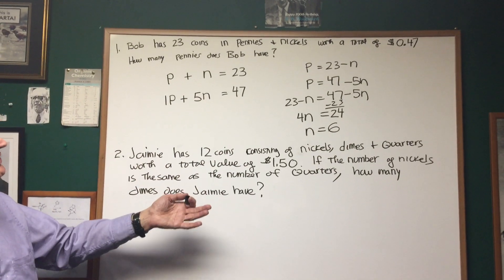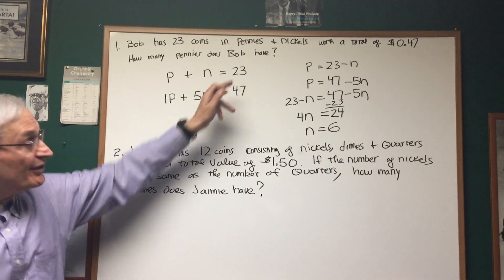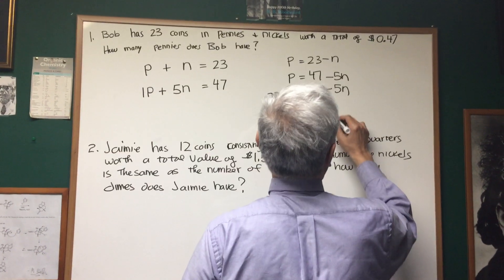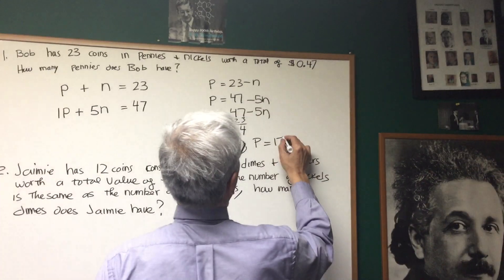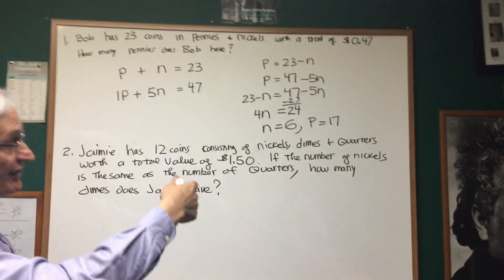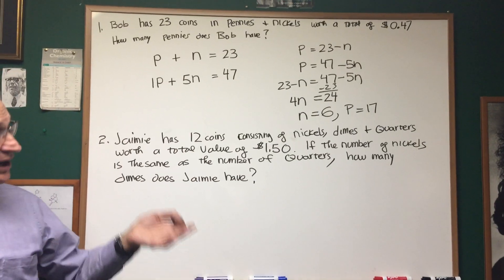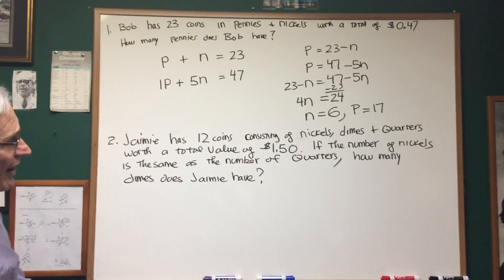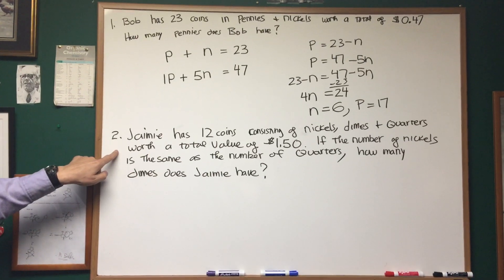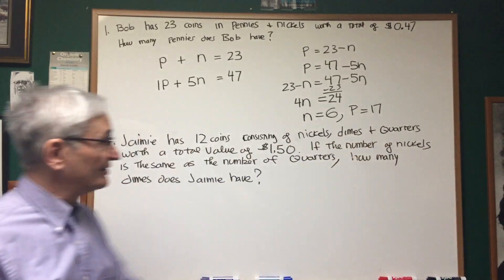Okay, well, we know there's six nickels. If there's a total of 23 coins, I know that the number of pennies has to be 17. 23 minus 6 is 17. Okay? Solved. Alright, now let's go to a second coin problem involving three different denominations.